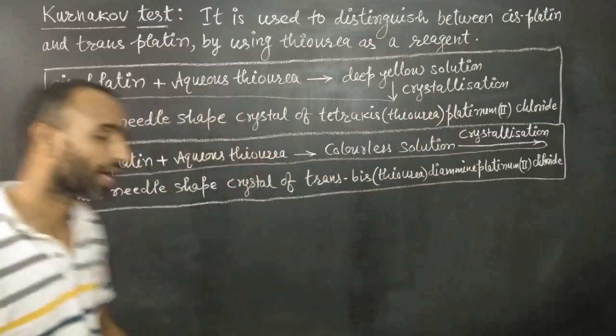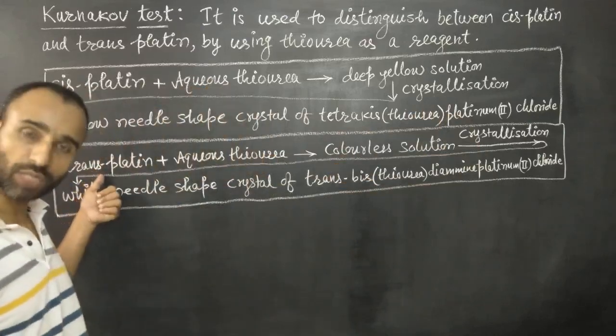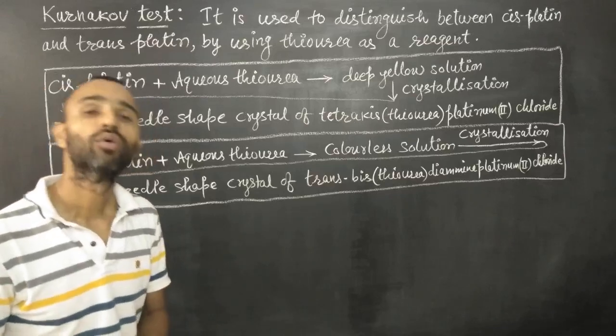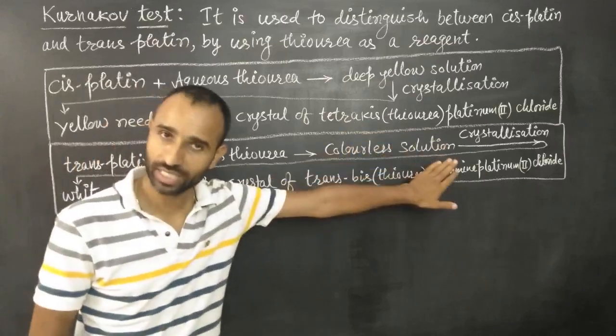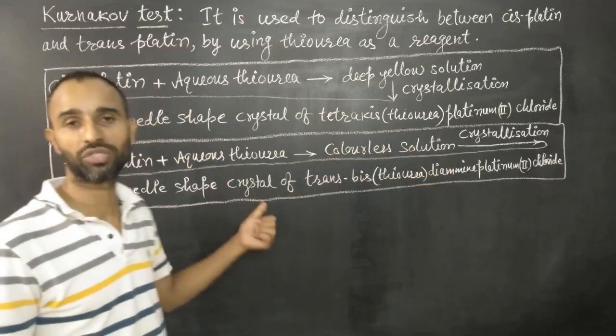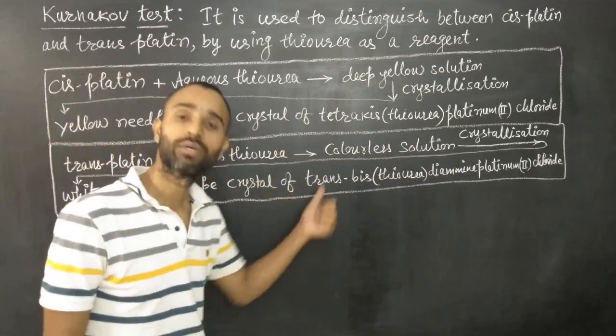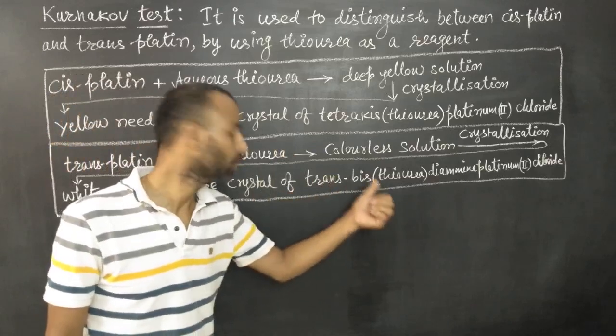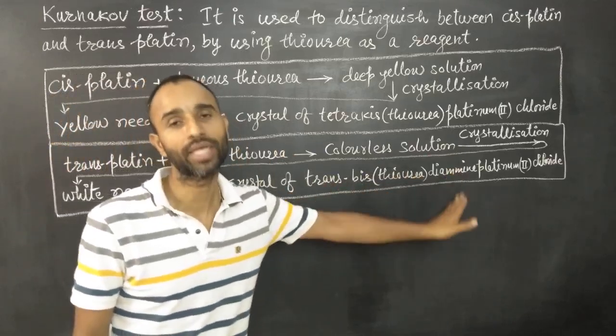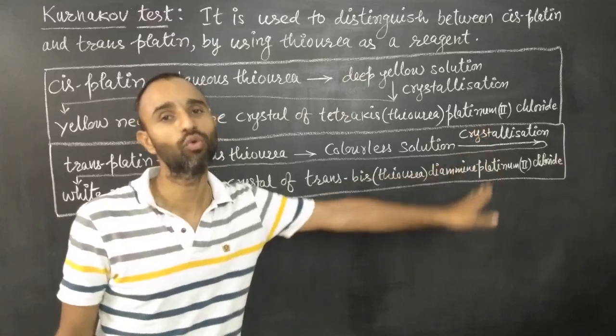platinum(II) chloride. And when we use transplatin along with aqueous solution of thiourea, the solution is colorless, and we get white needle-shaped crystals of trans-bis thiourea diamine platinum(II) chloride.